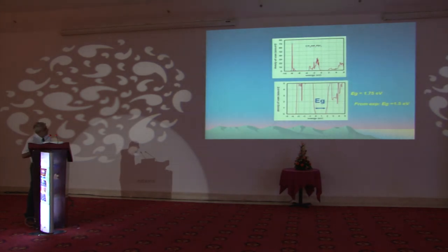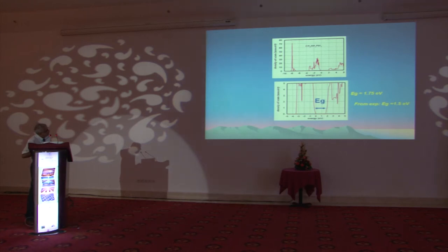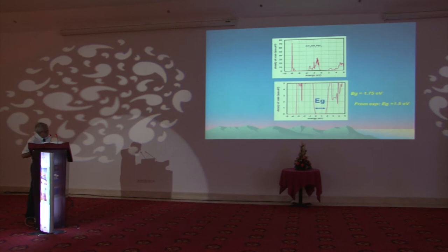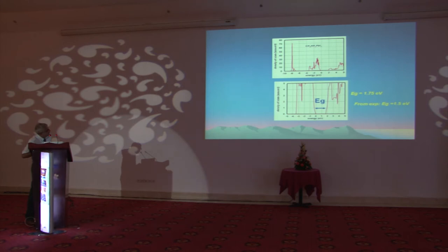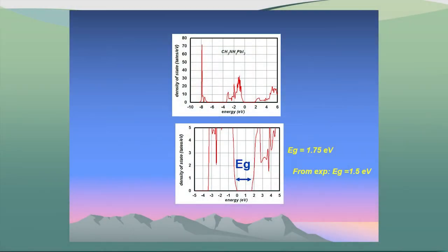This calculation for our perovskite material shows the total density of states. We have a gap here which we can extract precisely, and we found about 1.75 eV. It is close to the experimental value, but we will see that when I calculate absorption, the agreement between calculation and experimental data will be very good.